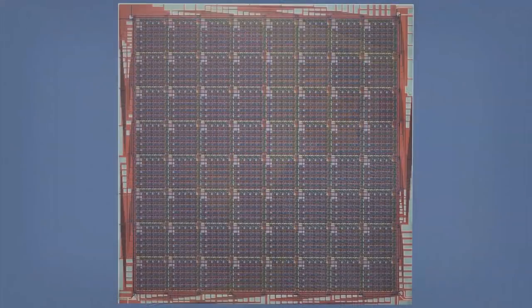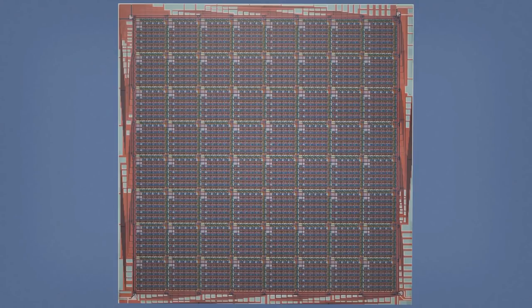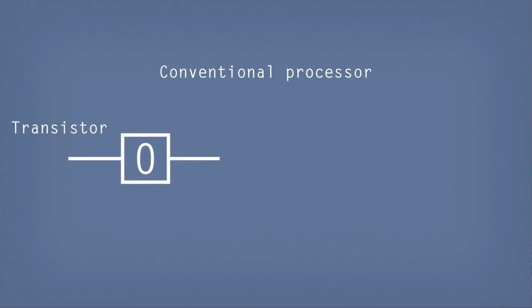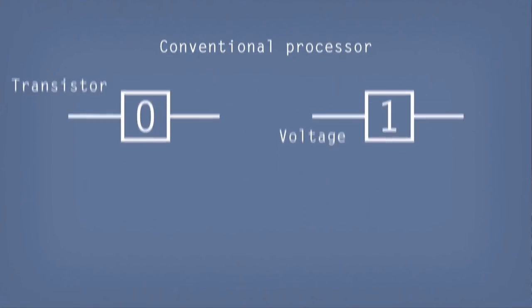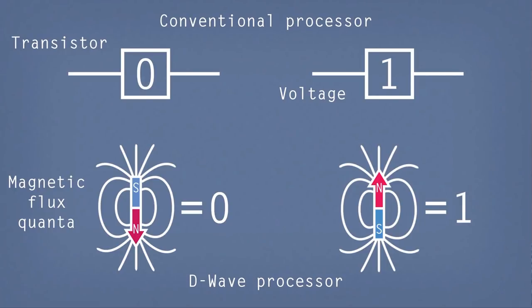So this is a blueprint of one of our processors. The design and construction of one of these is not really that different from that of a conventional processor. But a really important difference is that on a conventional processor, the ones and zeros are encoded as voltages and currents on that chip. In this processor, that information is actually encoded in small magnetic fields called single flux quanta, or quanta of magnetic flux.